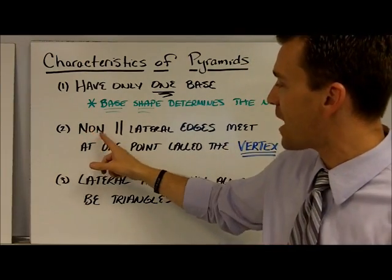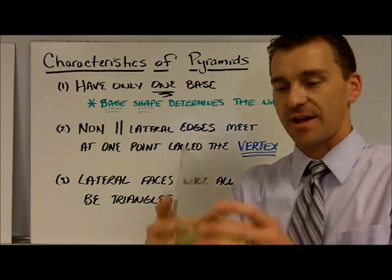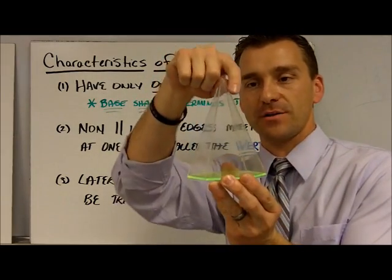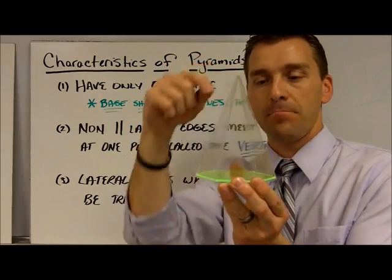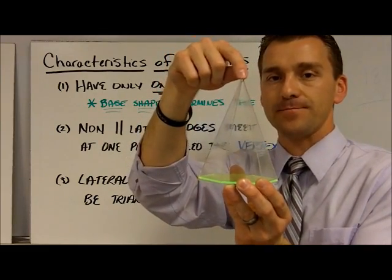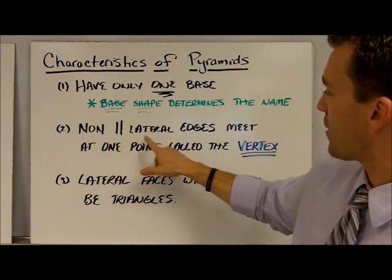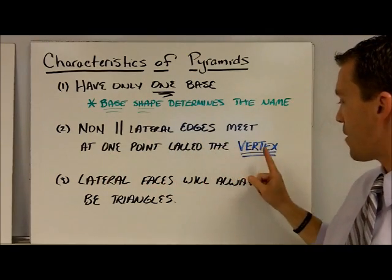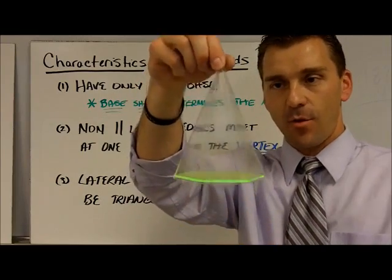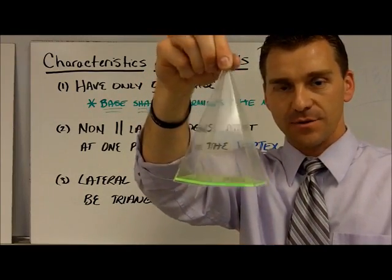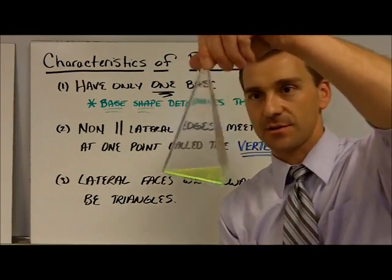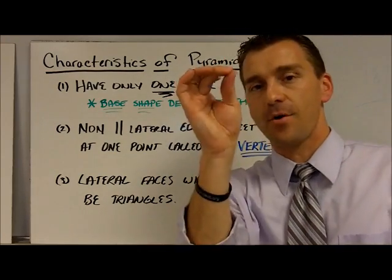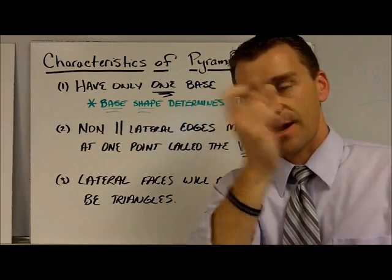Along with that, you have non-parallel lateral edges. That's these things right now. That's a non-parallel lateral edge compared to this one. But they all come together at a point up here. So non-parallel lateral edges meet at one point, and that's called the vertex. So all the lateral edges come together at the top, or the left, right, bottom. It doesn't matter. But that is the vertex.